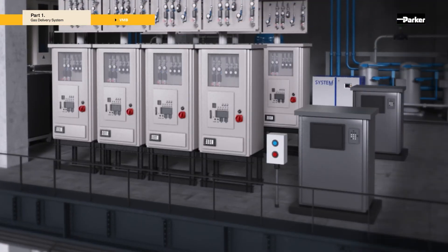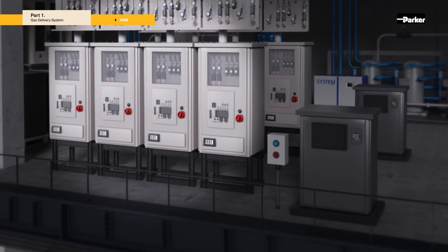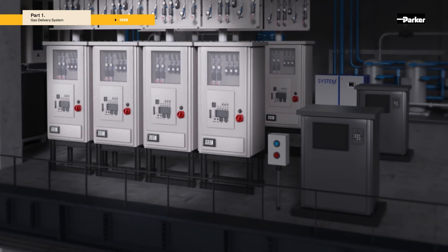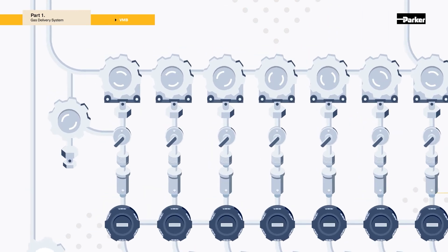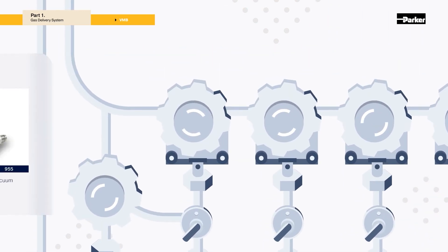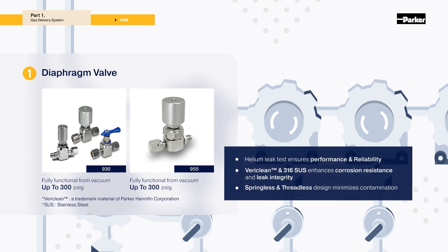Valve manifold boxes are required to distribute specialty gas to semiconductor production equipment. Diaphragm valves applied to the valve manifold box include the 930 series and the 955 series, which provide excellent reliability and leak integrity. Parker's technology minimized contamination and improved the efficiency of semiconductor processes.